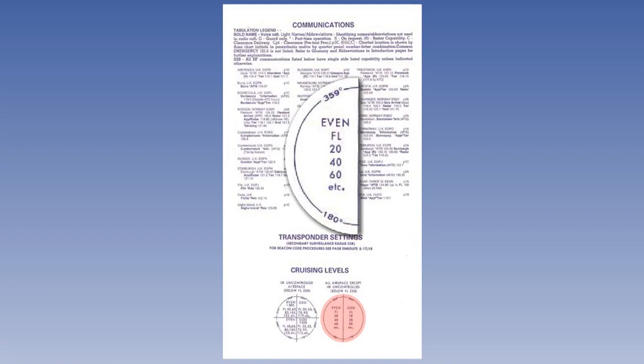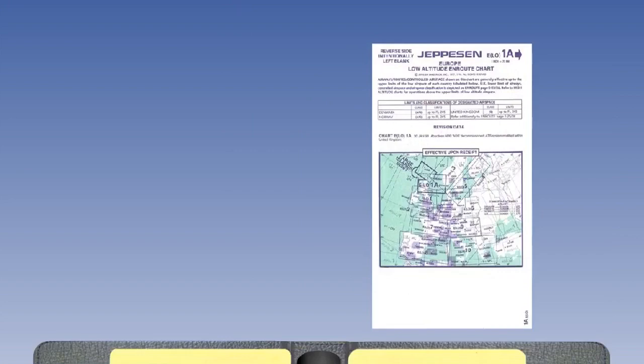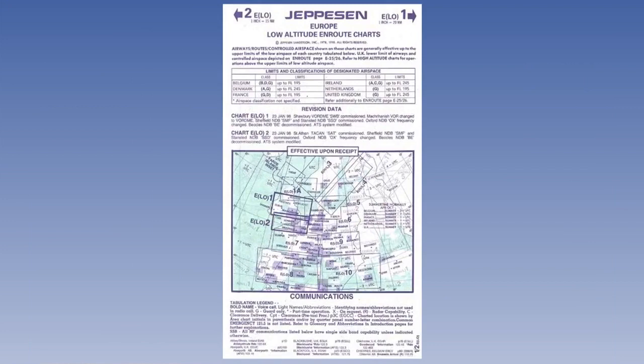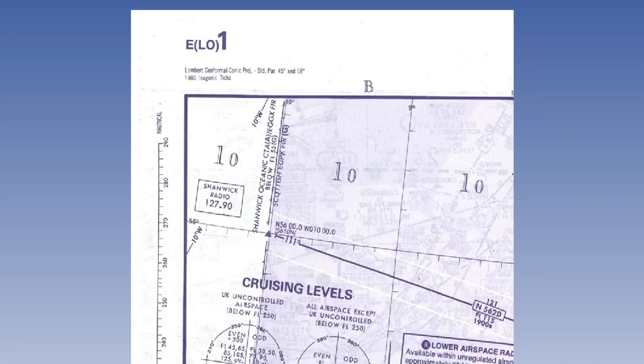Once you have read and understood the communications legend, open up the chart ELO1, which is at the back of the first envelope. Next to the chart number ELO1, you will see an arrow pointing to the right — this is the side of the paper on which you will find the required chart. The majority of on-route charts, including this one, are a Lambert's projection.